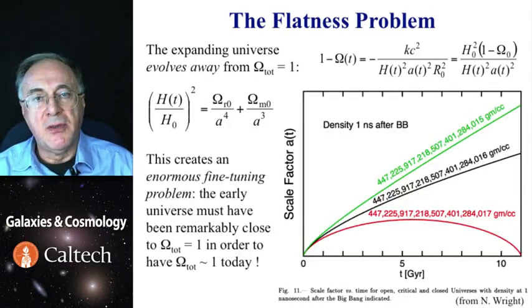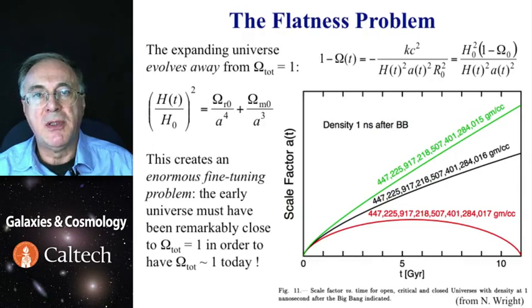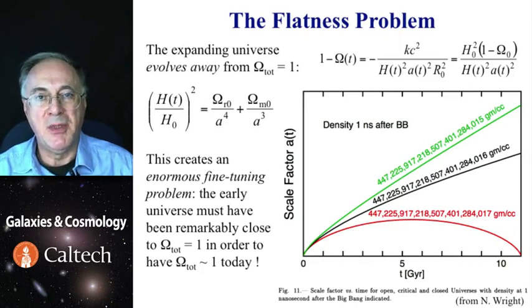A great illustration of that is shown in this diagram due to Ned Wright. It shows the density of the universe at one nanosecond after the Big Bang, and it was 400 something 6 billion and 16 grams per cubic centimeter. Add one more gram per cubic centimeter, the universe becomes closed and will collapse. Subtract one and the universe goes to expansion forever.